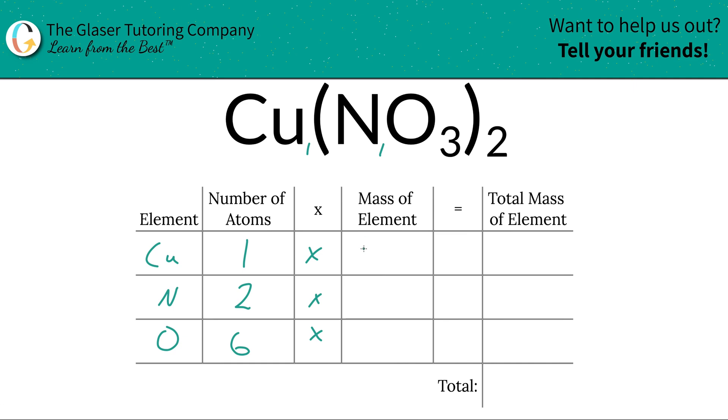So for the mass of copper, we're going to use 63.55. The mass of nitrogen was 14.01, and oxygen was 16. I write the six first. Don't ask me why.